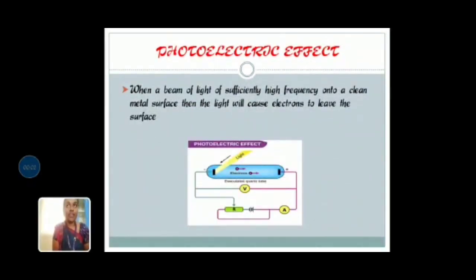Photoelectric effect. When a beam of light of sufficiently high frequency falls onto a clean metal surface, then the light will cause electrons to leave the surface. The phenomenon of electrons emitted by the metals when they are exposed to light of suitable frequency is called the photoelectric effect, and emitted electrons are called photoelectrons.